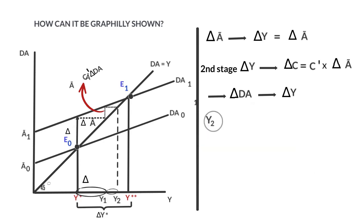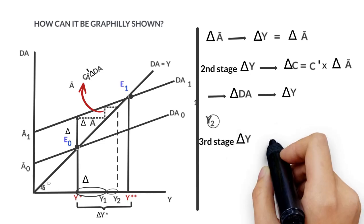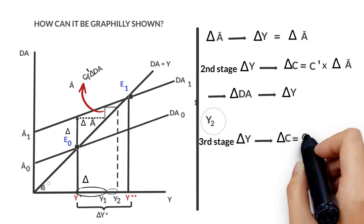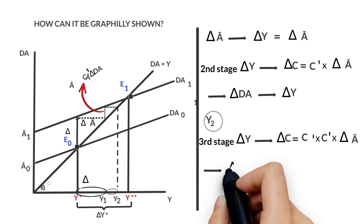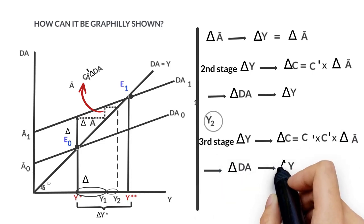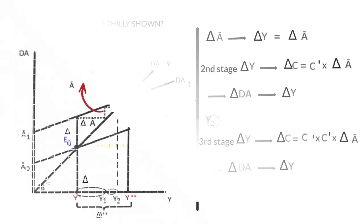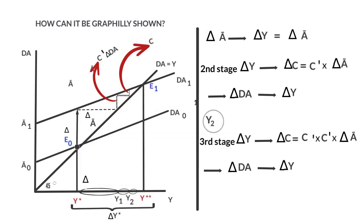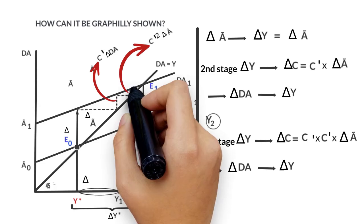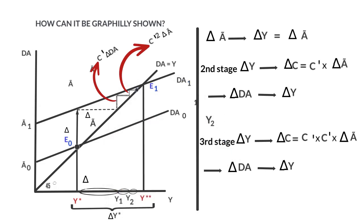This new increase to Y sub-2, in the third phase, will lead to an additional increase in consumption equal to the marginal propensity to consume times the previous increase in consumption — that is, the marginal propensity to consume times the increase in A — producing a new increase in aggregated demand that will lead to a further increase in income. Graphically, this new increase in income will generate a further increase in consumption equal to the marginal propensity to consume times the increase in A, which, if projected on the bisecting line, will generate a new increase in income equal to Y sub-3, thus getting to the income level Y sub-3.